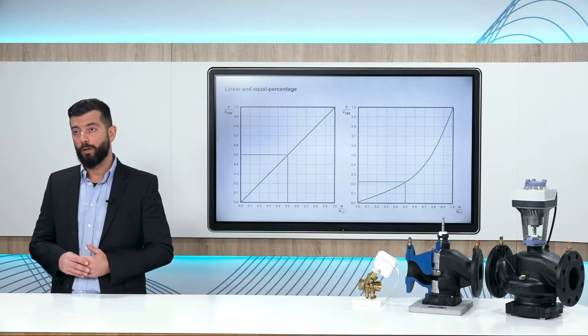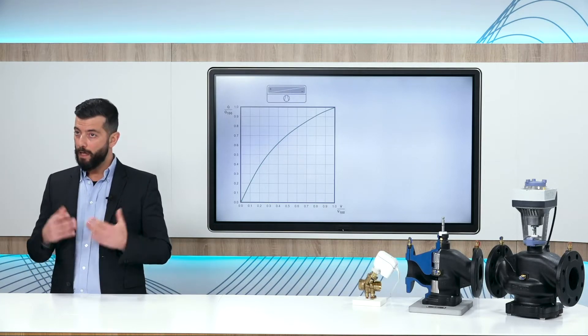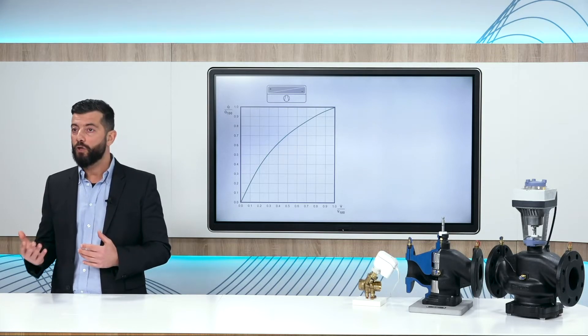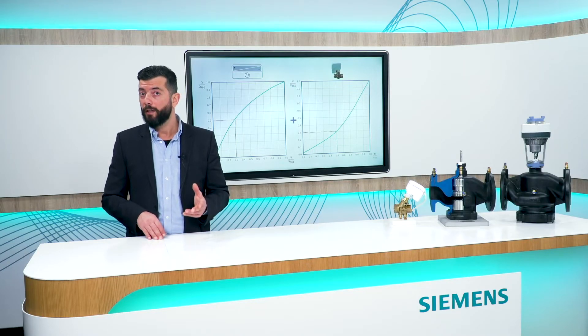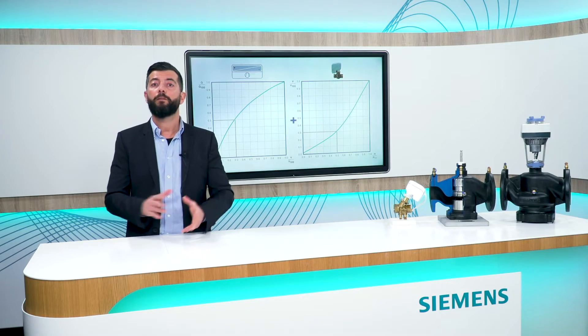Let's take a fan coil unit, for example, which has this flow energy characteristic. If you want to have a linear relationship between control signal and the energy output, then you need to combine a valve and actuator, which, when the building management system reduces the control signal down to 50%, it will deliver just 30% flow, so that the thermal output is 50%, as shown by the graphic on the left. And this particular shape of the characteristic is called equal percentage, and it is the combined performance of valve and actuator.